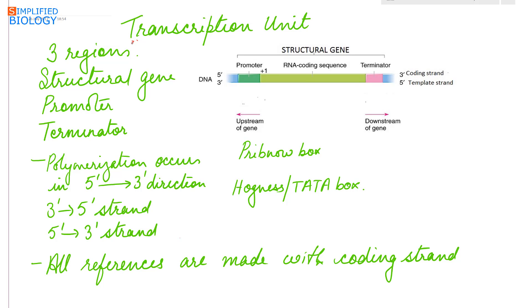The transcription unit is the part of DNA from which RNA is formed. It has three regions: the structural gene, the promoter, and the terminator.